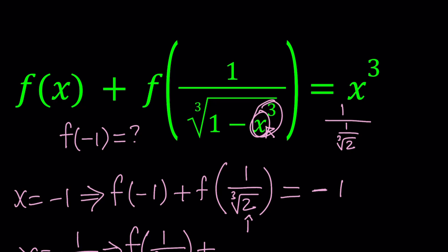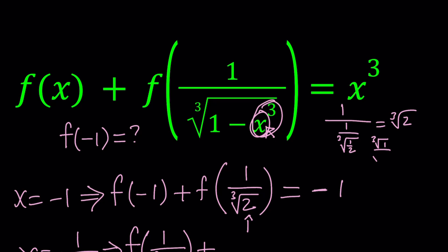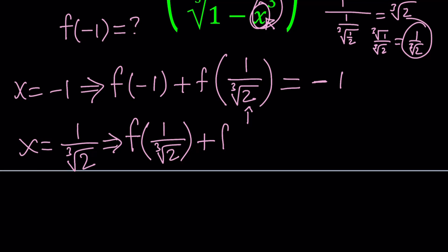Because the cube root of 1/2 equals 1/∛2, its reciprocal is ∛2. So the second term gives f(∛2). On the right-hand side, (1/∛2)³ = 1/2. So our second equation is f(1/∛2) + f(∛2) = 1/2.